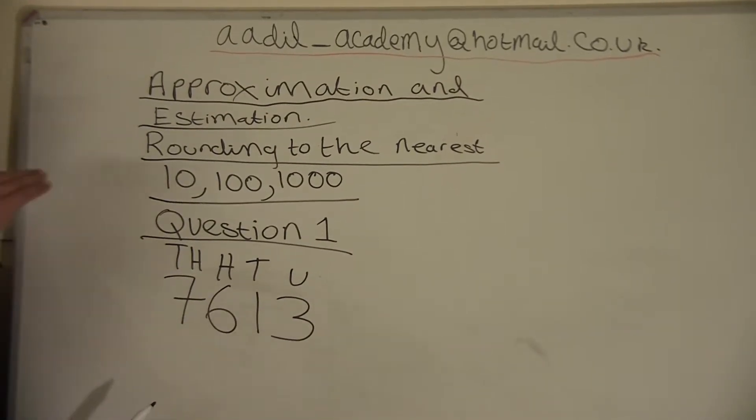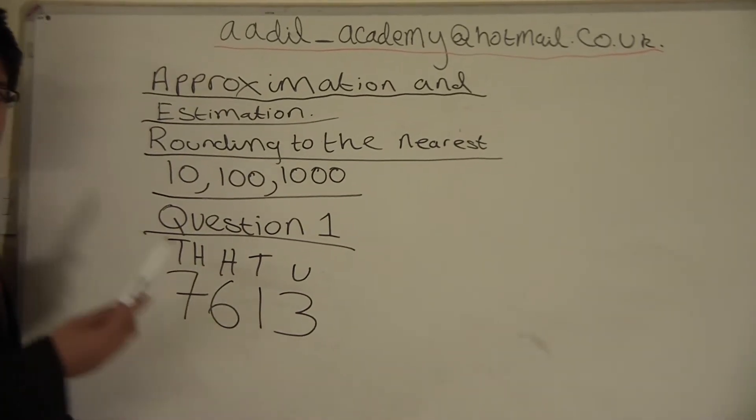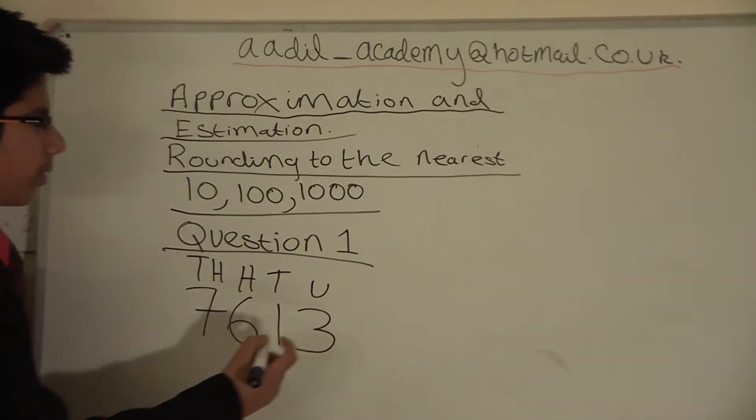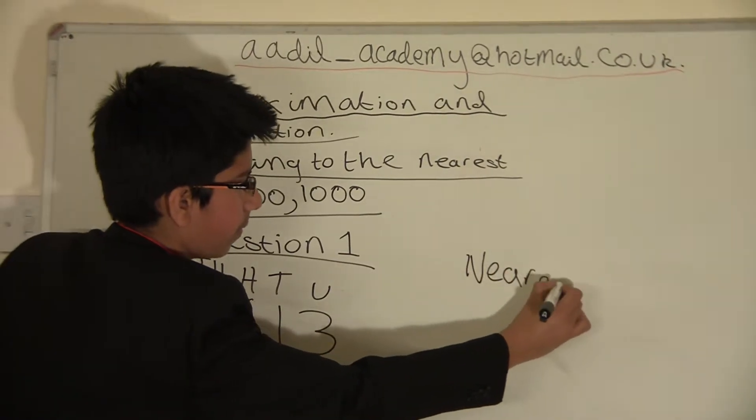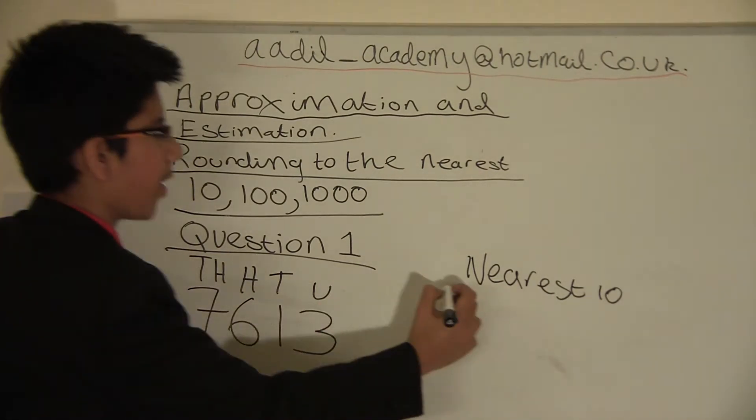If it is above five, we round up. In this case, three is below five, so we will round down. Nearest ten is 7610.